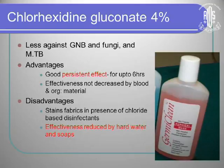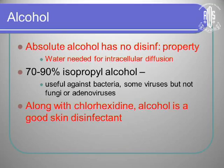Chlorhexidine is less effective against gram-negative bacilli and fungi, but it has a good persistent effect. Its effectiveness is reduced by hard water and soaps. Alcohol is a very good intermediate-level disinfectant. Absolute alcohol — 100% alcohol — is not a disinfectant; you need water for the disinfectant property of alcohol. That is why 70–90% isopropyl alcohol is a good disinfectant. Combining it with chlorhexidine makes a very good skin disinfectant.